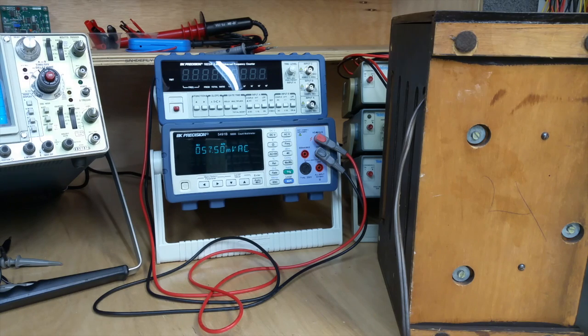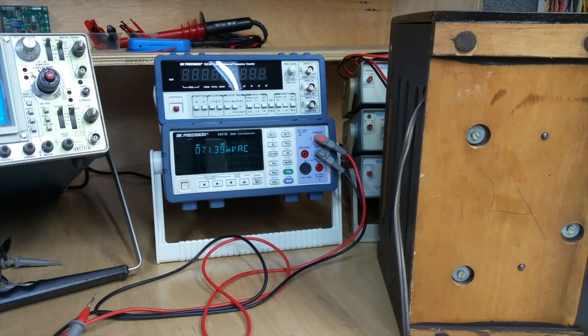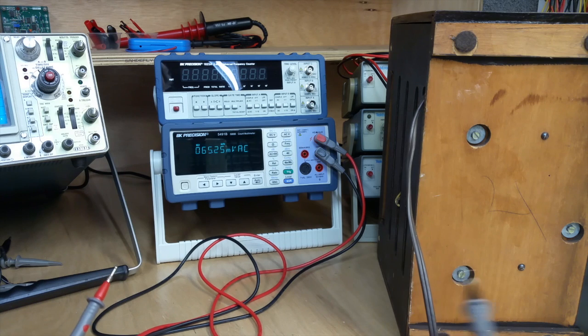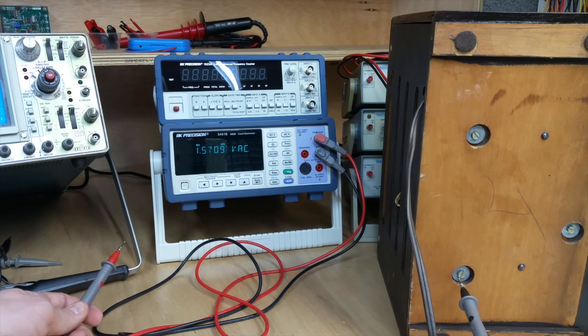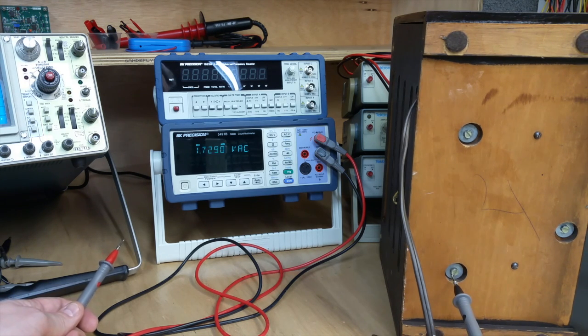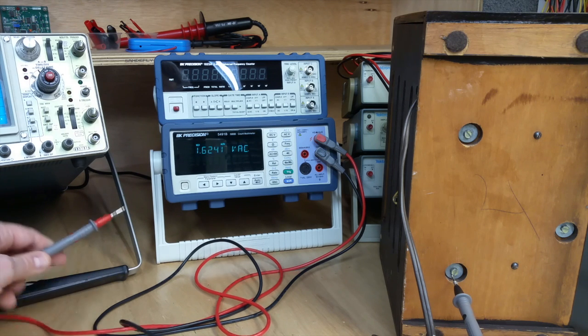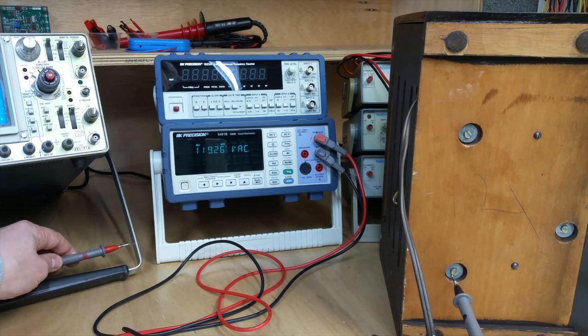So what we're going to do is we're going to take our bench meter here and we're going to touch one probe to the metallic screw. And what we're going to do is we're going to touch the other probe to the handle of this oscilloscope, which is plugged in, and the case of this oscilloscope is grounded through the power line.